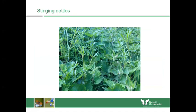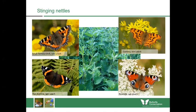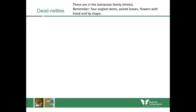Most people know stinging nettles, but I want to remind you they are an important food source for many butterfly species including the small tortoiseshell, comma, peacock and red admiral. The caterpillars of these are not camouflaged at all — often they're large and black with spikes, which hopefully deters predators. Stinging nettles are a woodland plant found along woodland edges and are still important for butterflies.